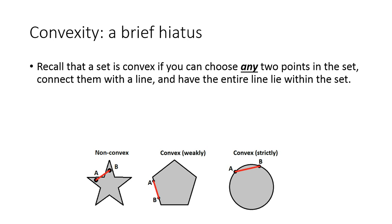So let's just take a brief hiatus here. A set is convex if you can pick any two points in the set, connect them with a straight line, and have the entire line lie within the set. So notice these two middle sets here, this set and this circle here, these are both convex sets. I can draw a line picking any two points in either of these sets, I can connect them, and the line itself, the segment connecting those two points, will fall somewhere within the region or on the boundary.